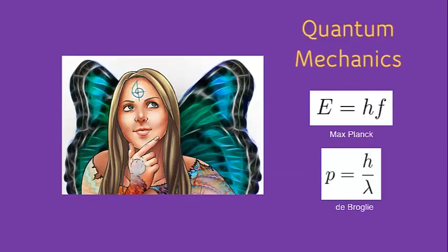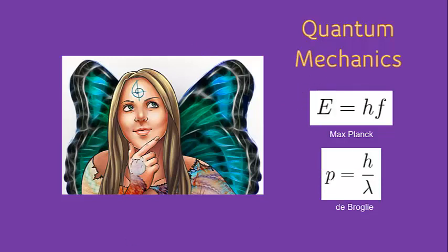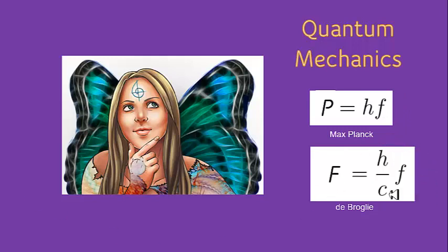In the previous video I asked a simple question: how come quantum mechanics, or the main equations associated with quantum mechanics, are written in terms of energy and momentum instead of force and power? I then went on to rewrite these two equations in terms of power and force, and for the de Broglie relation I further rewrote that so that it is in the frequency domain. This is how I do quantum mechanics.